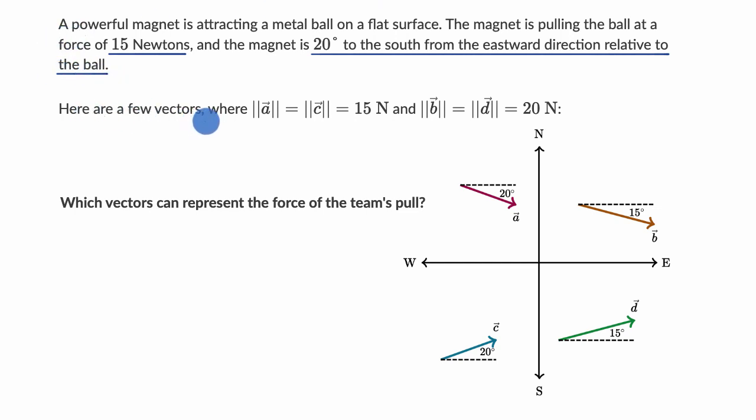Here are a few vectors where the magnitude of vector A is equal to the magnitude of vector C is equal to 15 newtons, and the magnitude of vector B is equal to the magnitude of vector D, which is equal to 20 newtons. Which vectors can represent the force of the team's pull?